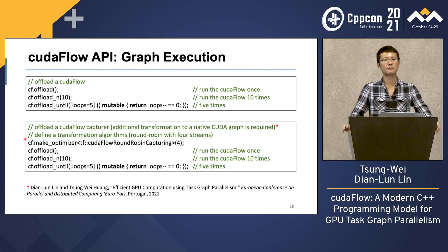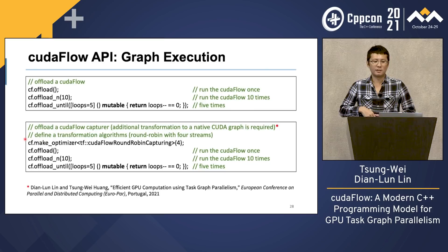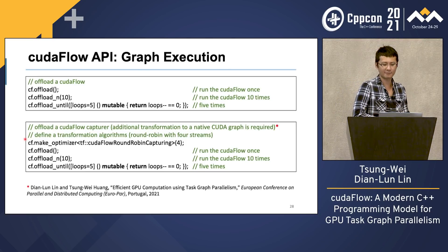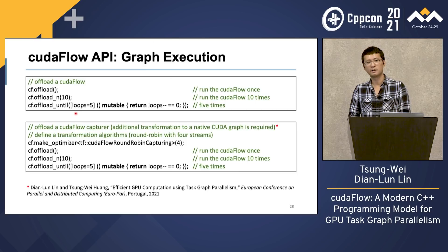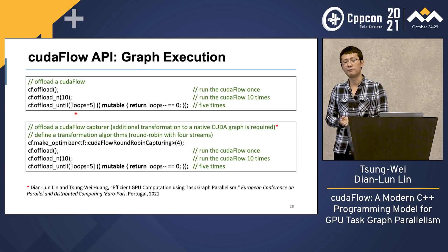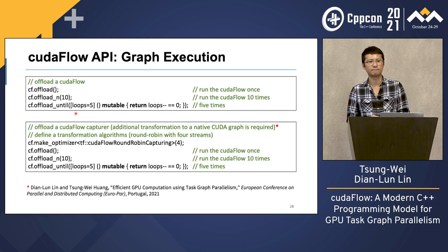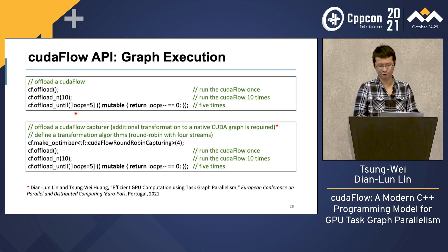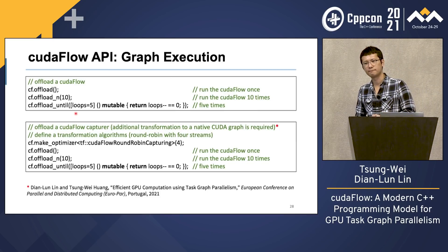In response to a question about offloading until a target is reached: yes, this is doable with the offload_until method, where you can specify a lambda function object as a predicate. For example, to offload a CUDA Flow for five times, you specify the lambda predicate, and this essentially translates to a simple while loop — while the predicate is not true, we keep running the CUDA Flow — allowing us to utilize the repetitive execution advantage of CUDA Graph.